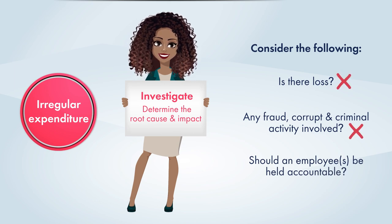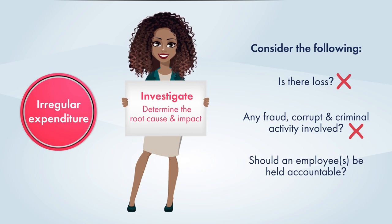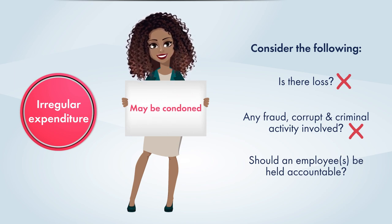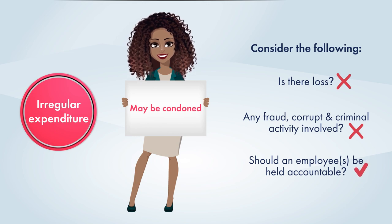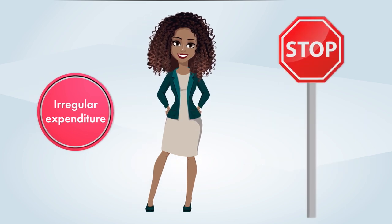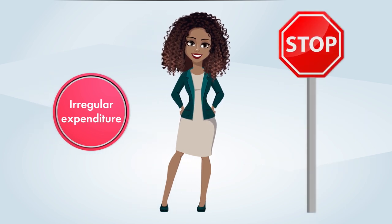If there was no loss or fraud, corrupt and criminal activity, the irregular expenditure may be condoned by the relevant authority. The necessary disciplinary action should be taken against the employee or employees responsible. This should act as a deterrent for any further irregular expenditure.